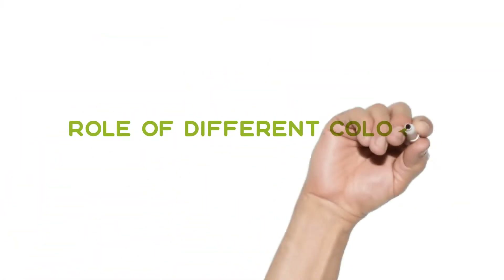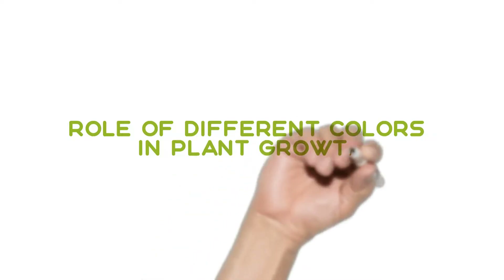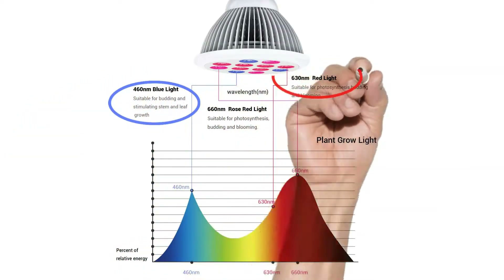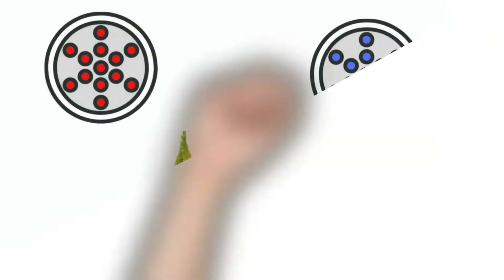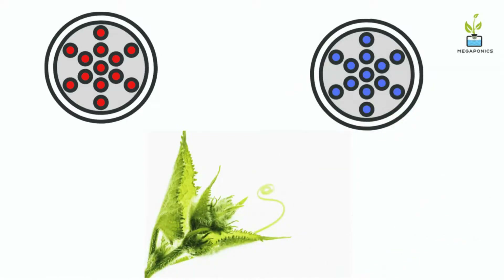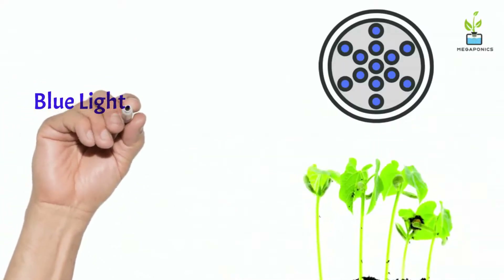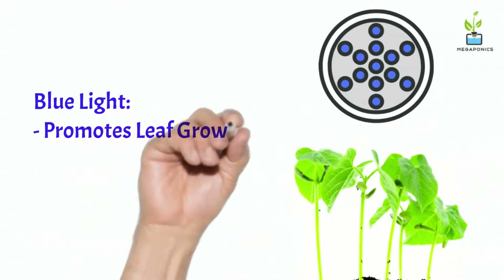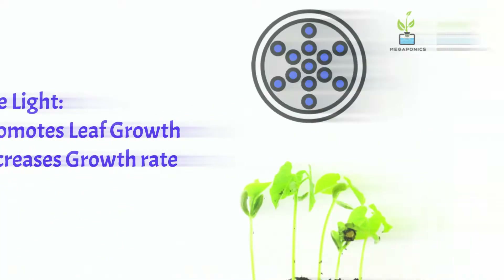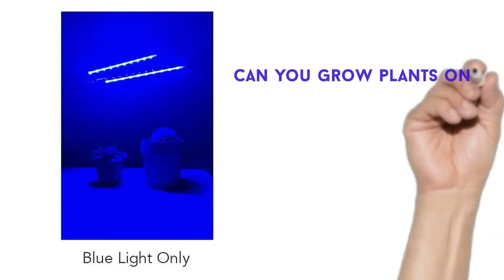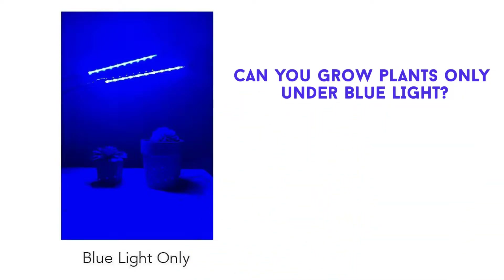Red and blue light are mostly responsible for photosynthesis, but other lights in the PAR range are also useful. Plants bend towards the blue wavelength of light — blue wavelength promotes the growth of green leaves and increases the growth rate of plants. However, you cannot grow plants only under blue light.